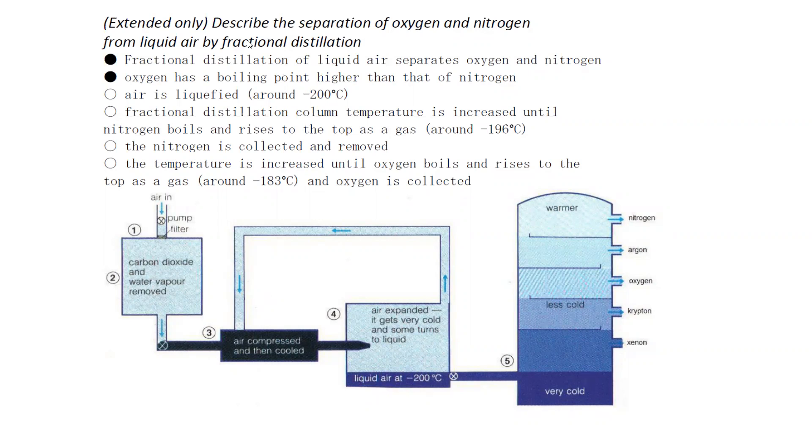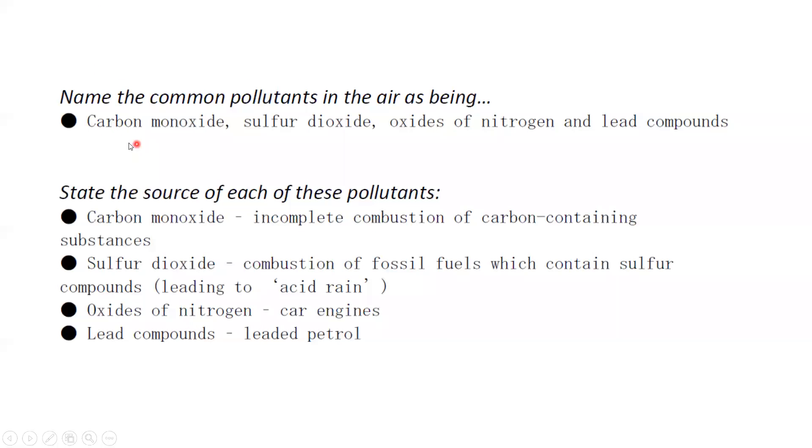Now, about air pollutants. Some common pollutants are carbon monoxide, sulfur dioxide, oxides of nitrogen, and lead compounds. Carbon monoxide is produced by incomplete combustion when there's a limited supply of oxygen. Sulfur dioxide - fossil fuels like coal contain some trace of sulfur. When we burn coal, it produces carbon dioxide but also produces sulfur dioxide because some sulfur is present.